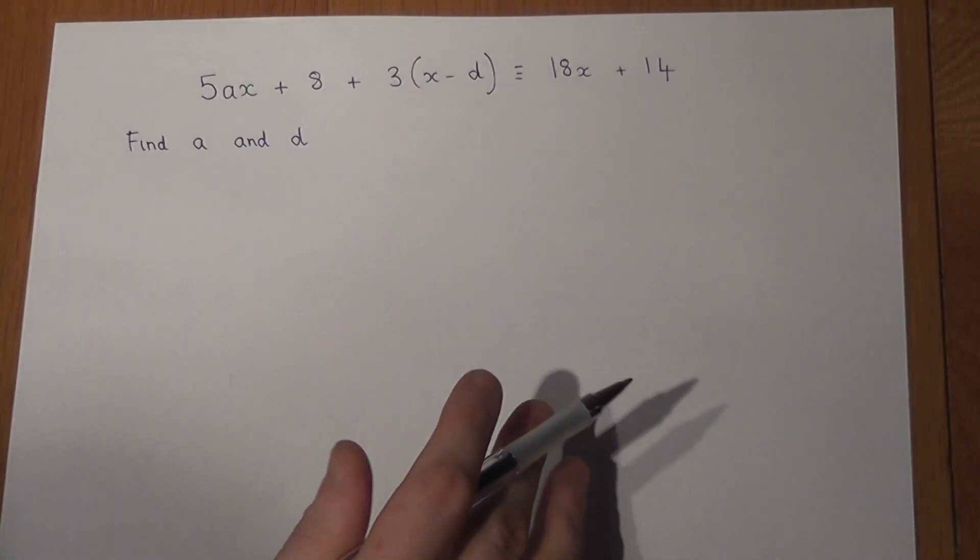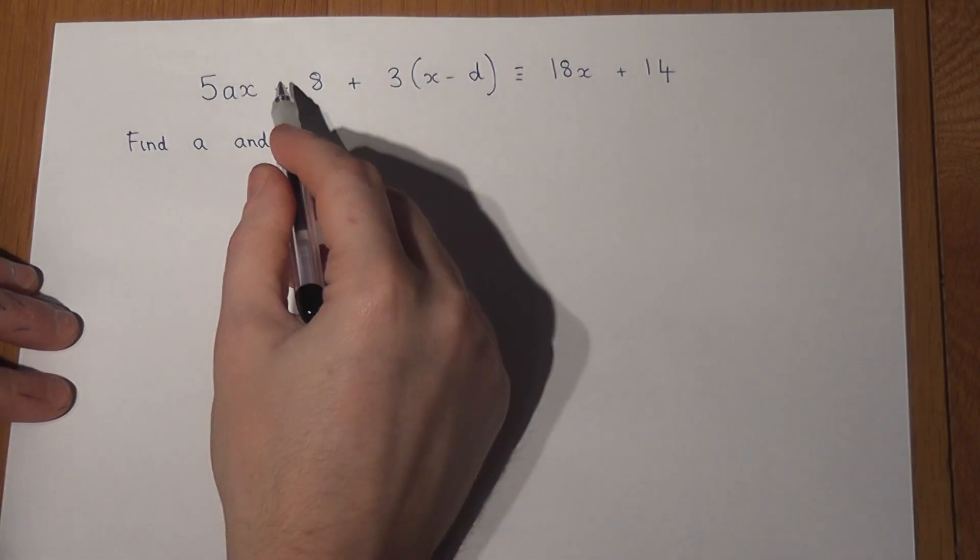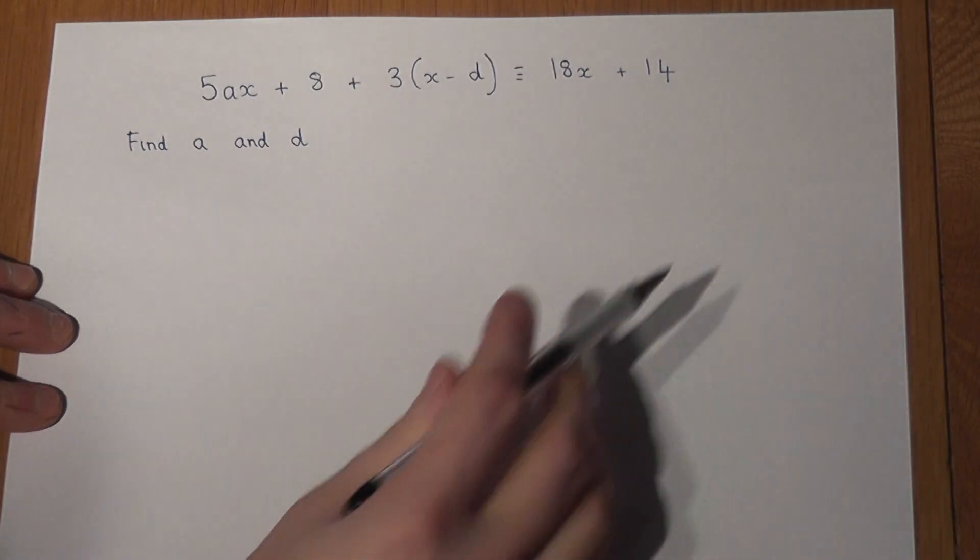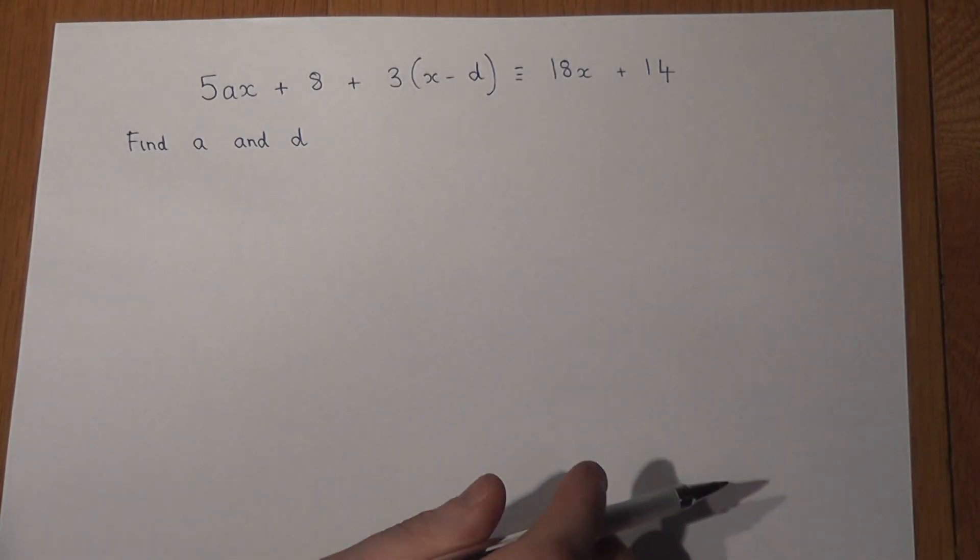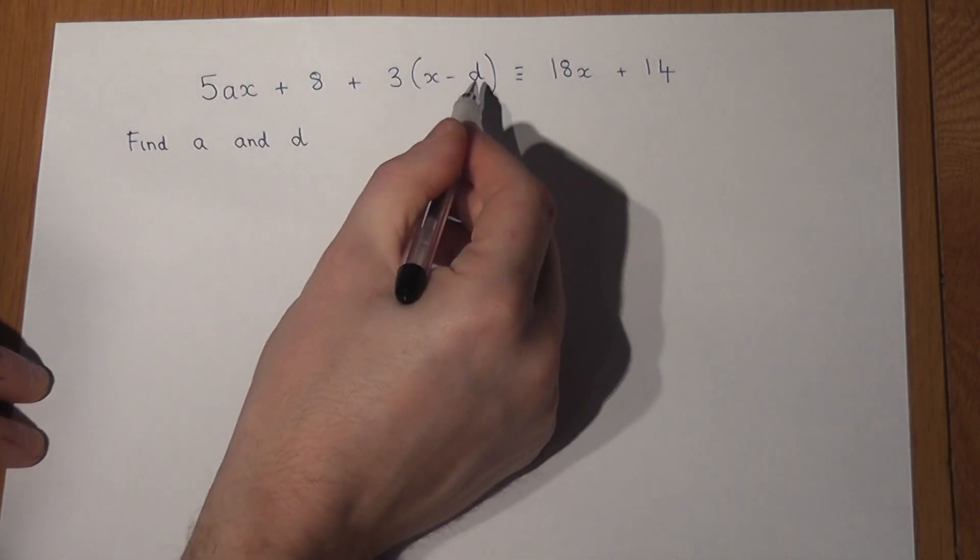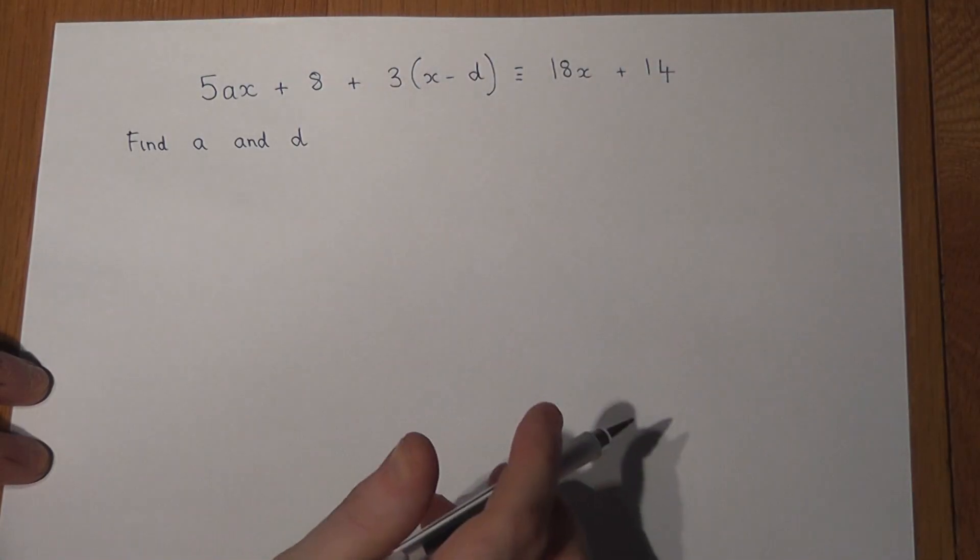This video revises what are called identities, and this is where we have a left hand side and a right hand side and the two things are identical. The question is what's the value of a and the value of d to make the left hand side equal to the right hand side.